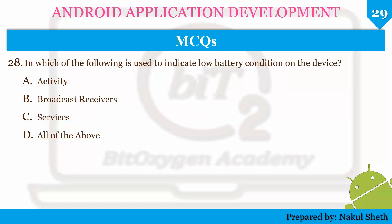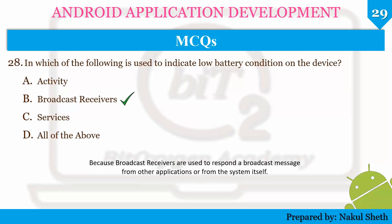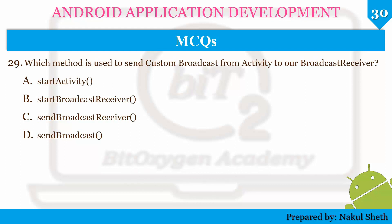Next question: which of the following is used to indicate a low battery condition on the device? The options are Activity, Broadcast Receivers, Services, or all of the above. The correct answer is Broadcast Receivers, because broadcast receivers are used to respond to a broadcast message from other applications or from the system itself. Next question: which method is used to send a custom broadcast from an activity to a broadcast receiver? The correct answer is sendBroadcast.